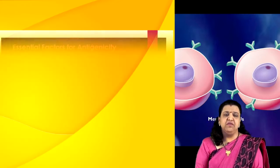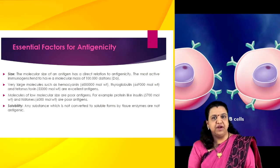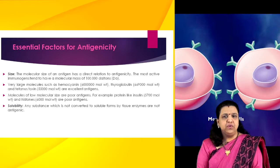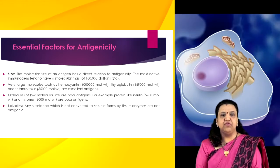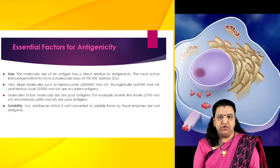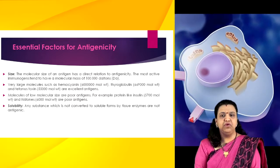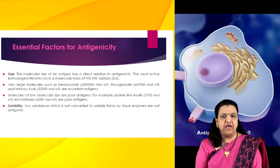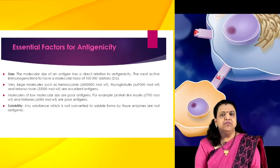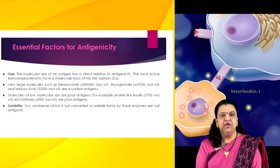There are many essential factors that determine the antigenicity of any molecule. Size is one very important factor. The molecular size of an antigen has a direct relation to antigenicity. The most active immunogen tends to have a molecular mass of 100,000 daltons. Generally, substances with a molecular mass less than 5,000 to 10,000 daltons are poor immunogens, although a few substances with a molecular mass less than 1,000 daltons have proven to be immunogenic. Very large molecules such as haemocyanin, thyroglobulin, and tetanus toxin are excellent antigens, whereas molecules of low molecular size such as insulin and histones are poor antigens.